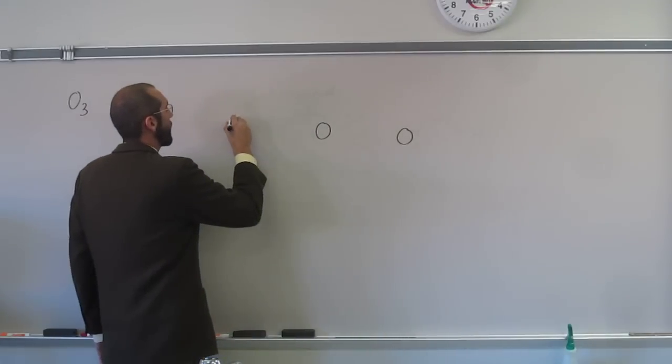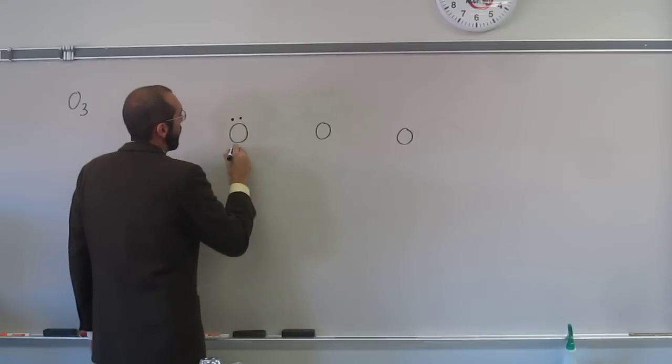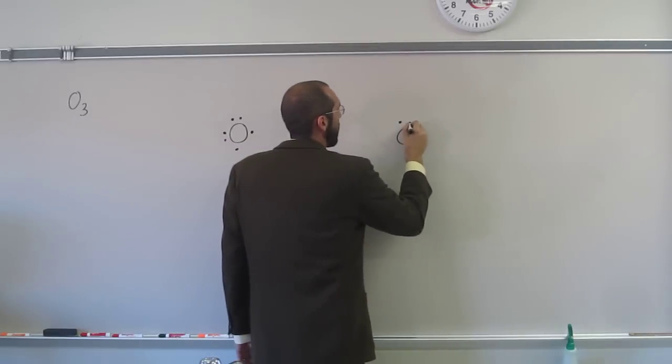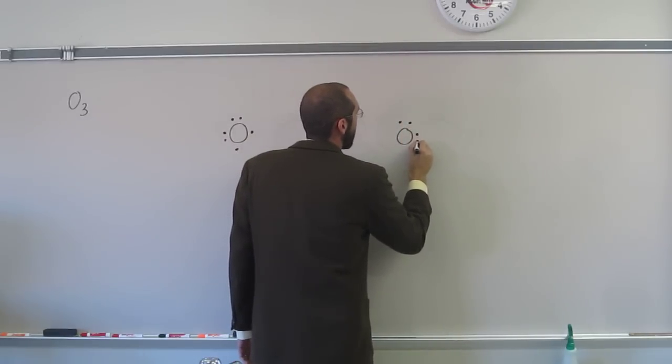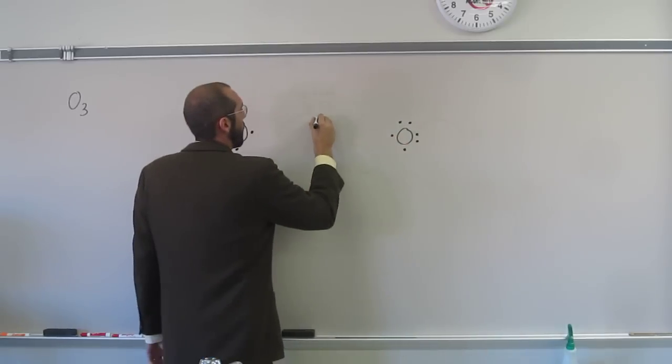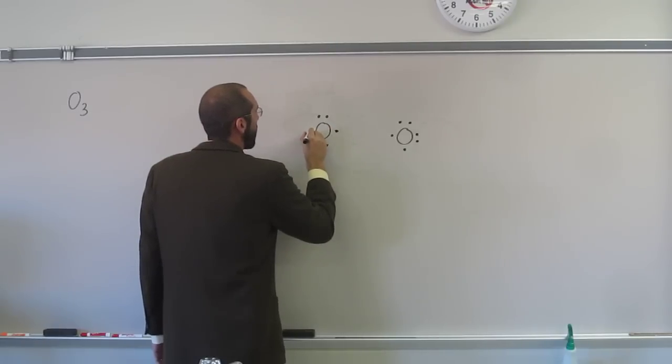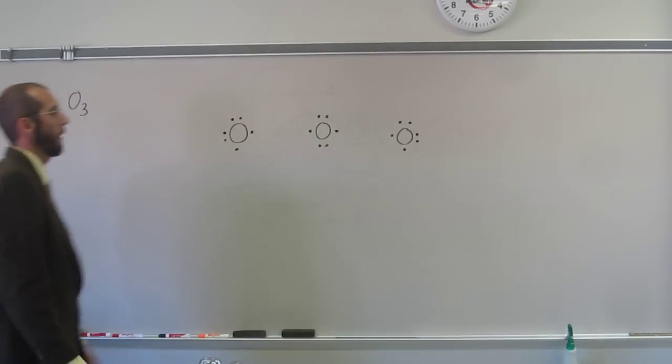So, in fact, let's draw the valence electrons. One, two, three, four, five, six on each oxygen atom. Like that.